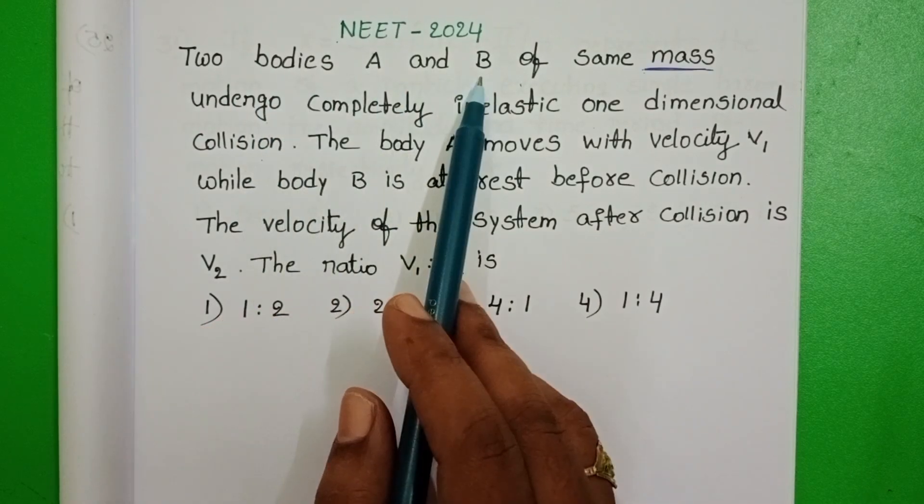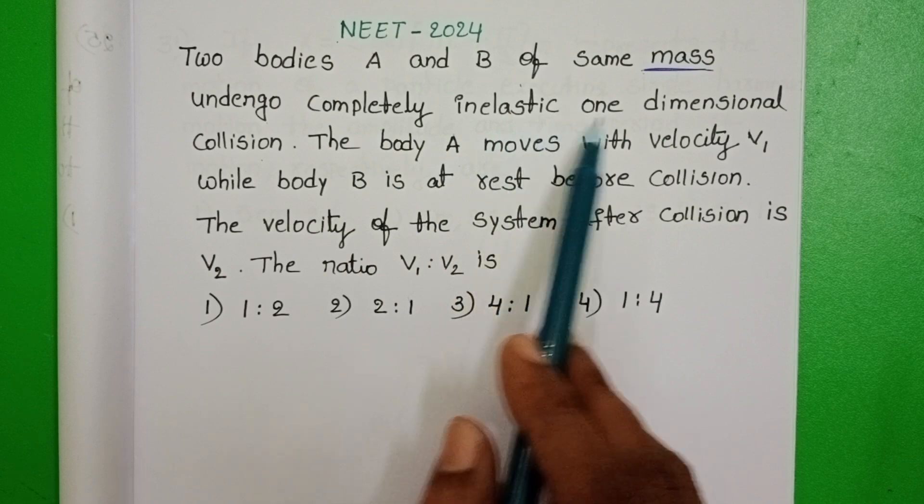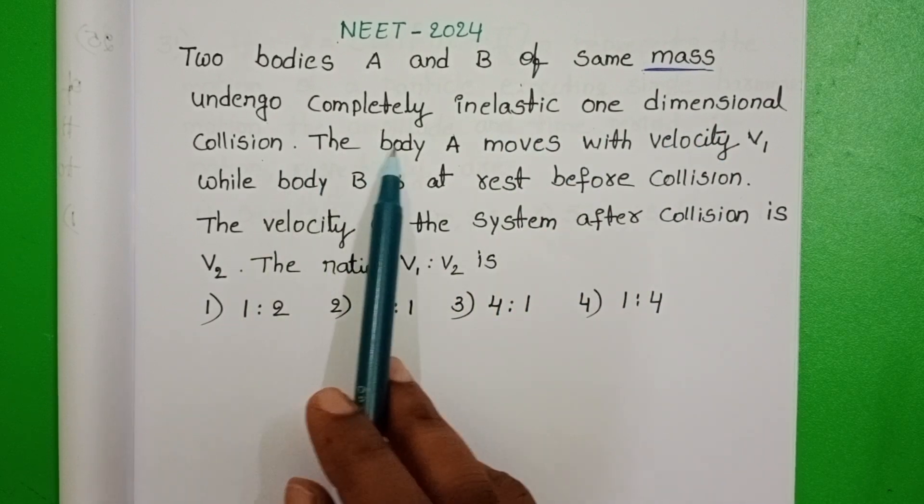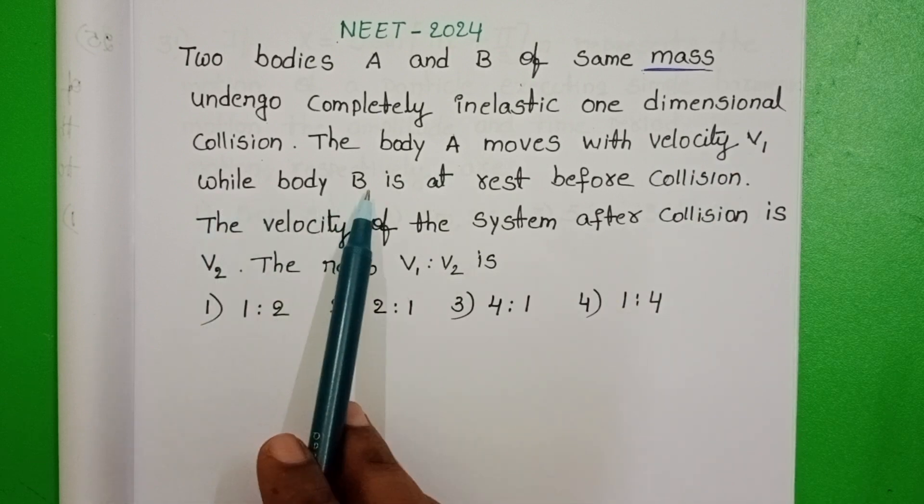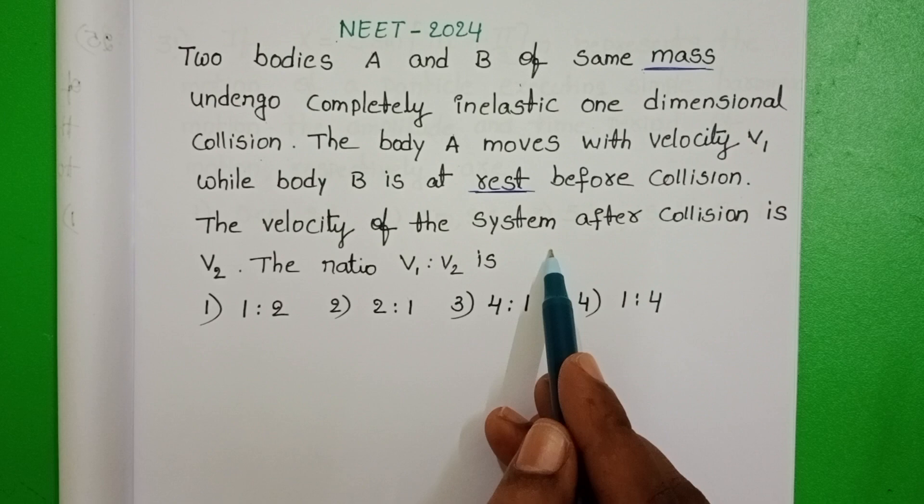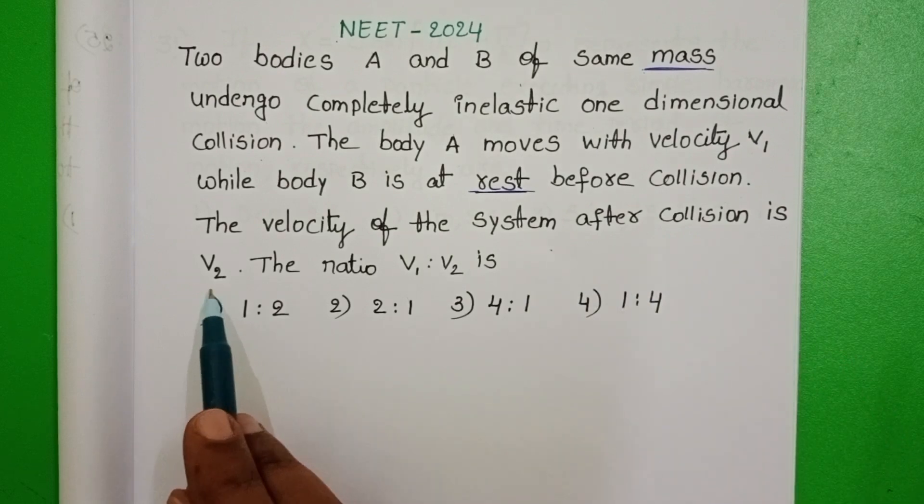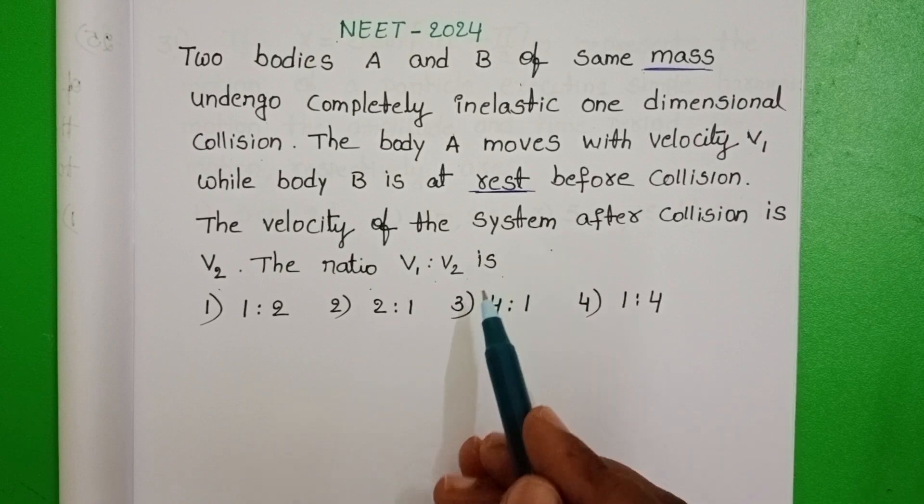Two bodies A and B of same mass undergo completely inelastic one-dimensional collision. The body A moves with velocity V1 while body B is at rest before collision. The velocity of the system after collision is V2. The ratio of V1 to V2 is.